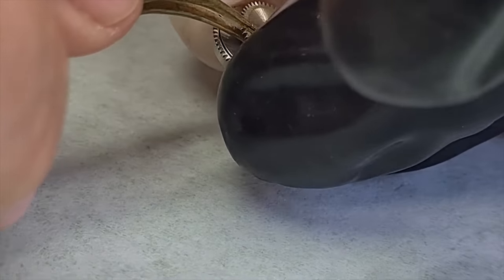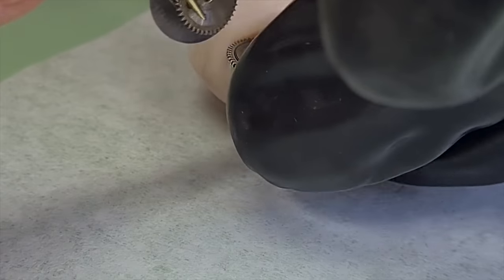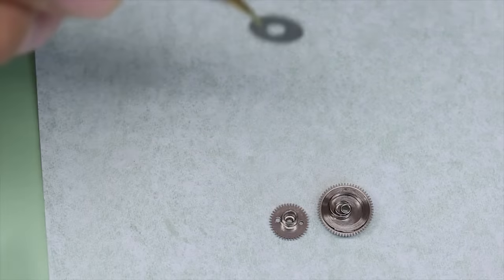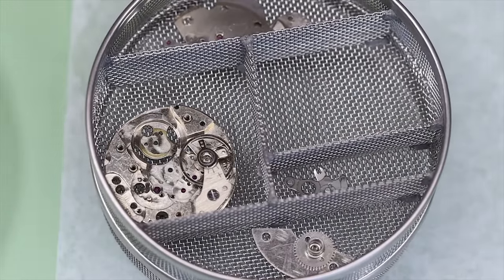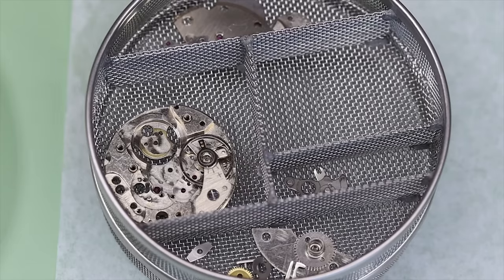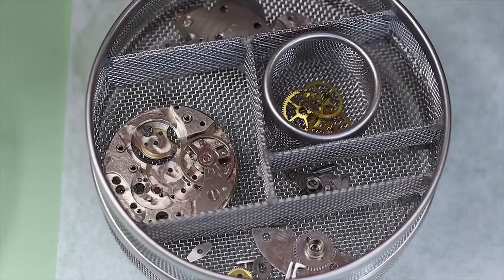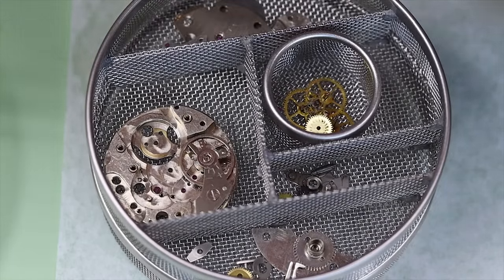And we also see that the barrel is a little bit different. It's similar to the one we found in the rust bucket challenge. So we're actually going to clean the barrel and the spring separately. And then we'll put the rest in the baskets and take them to the cleaning machine.